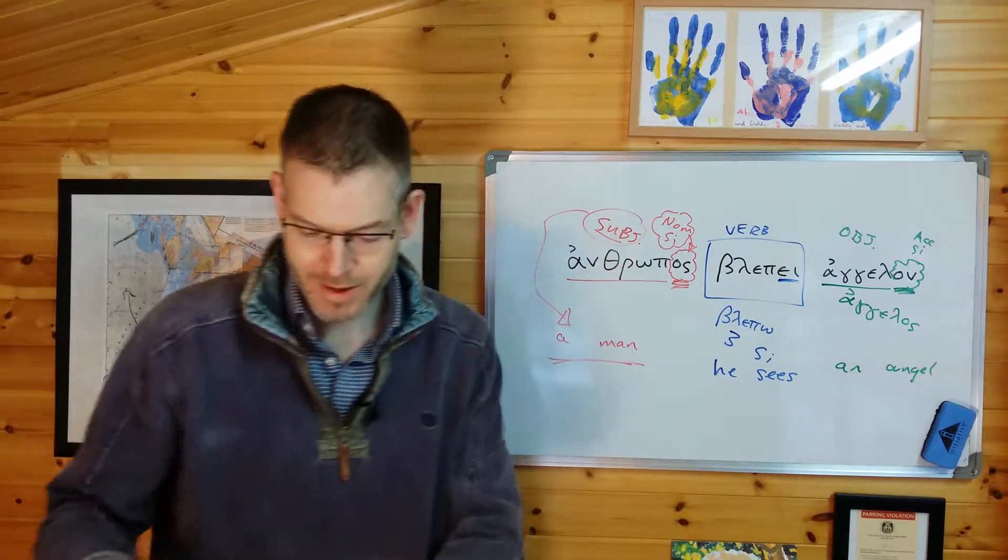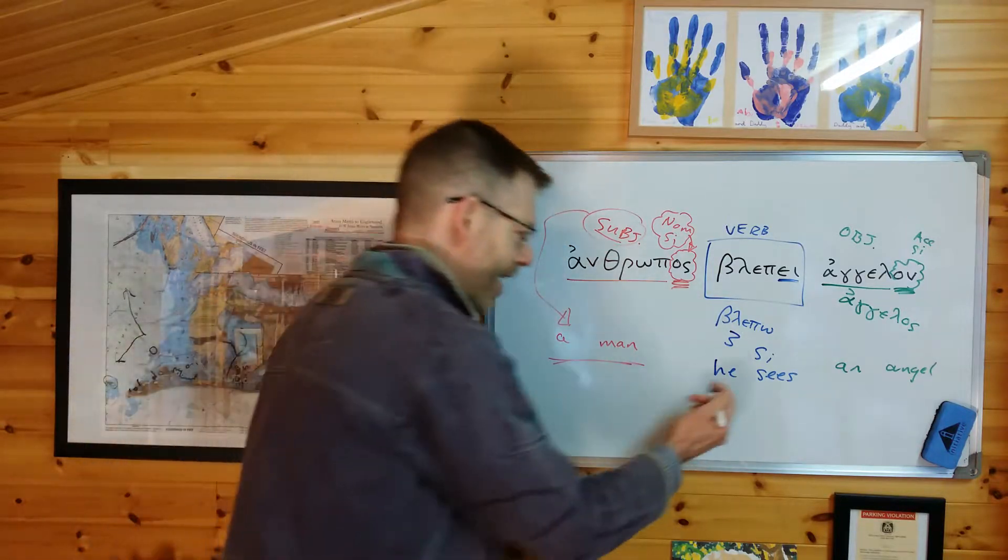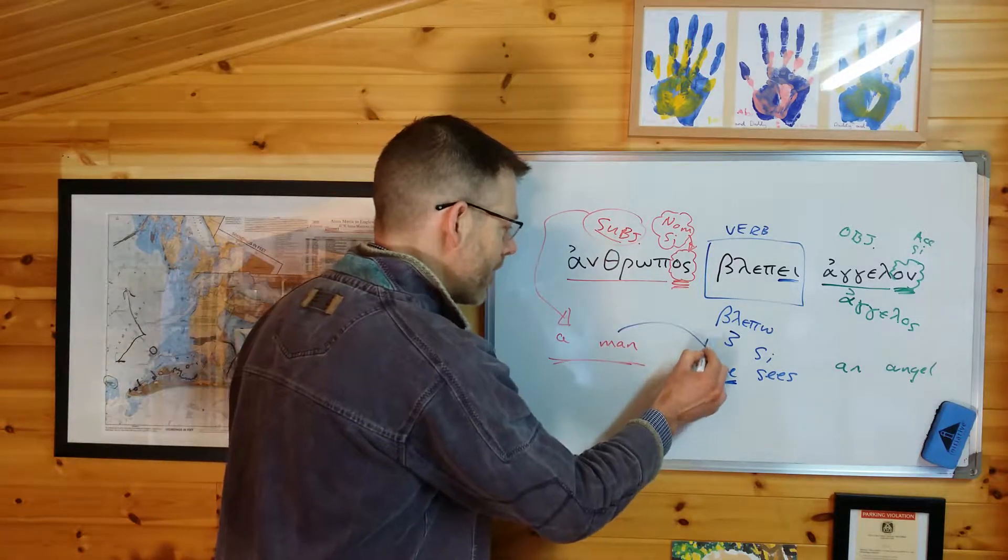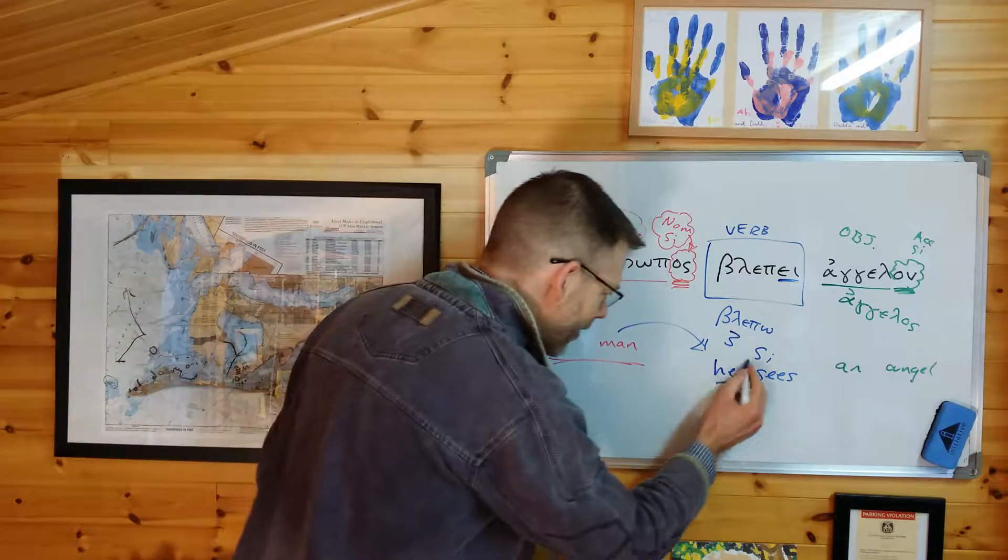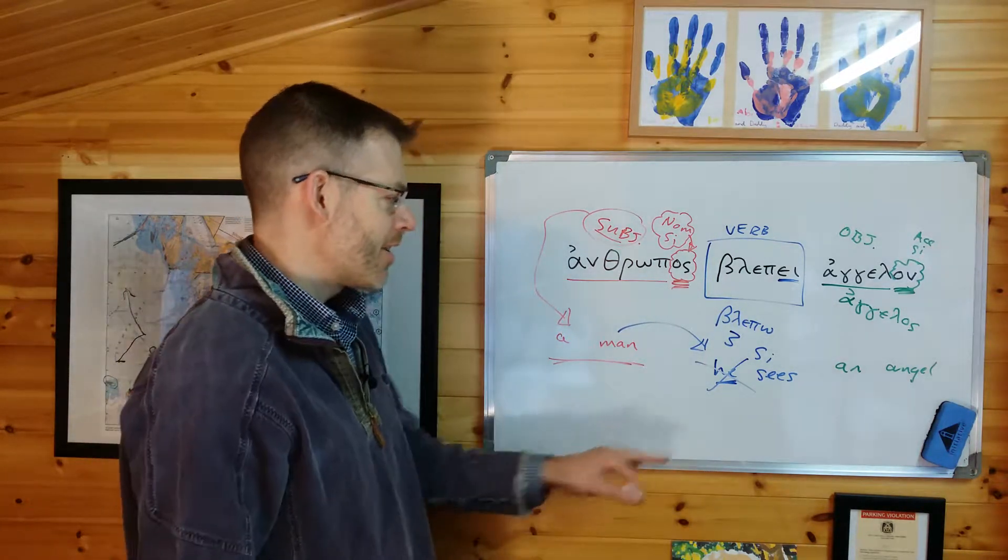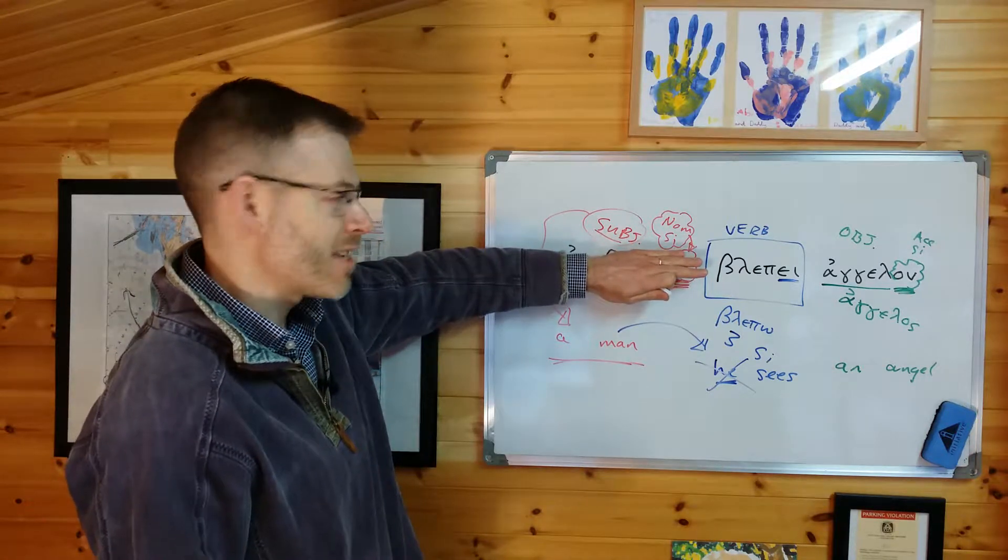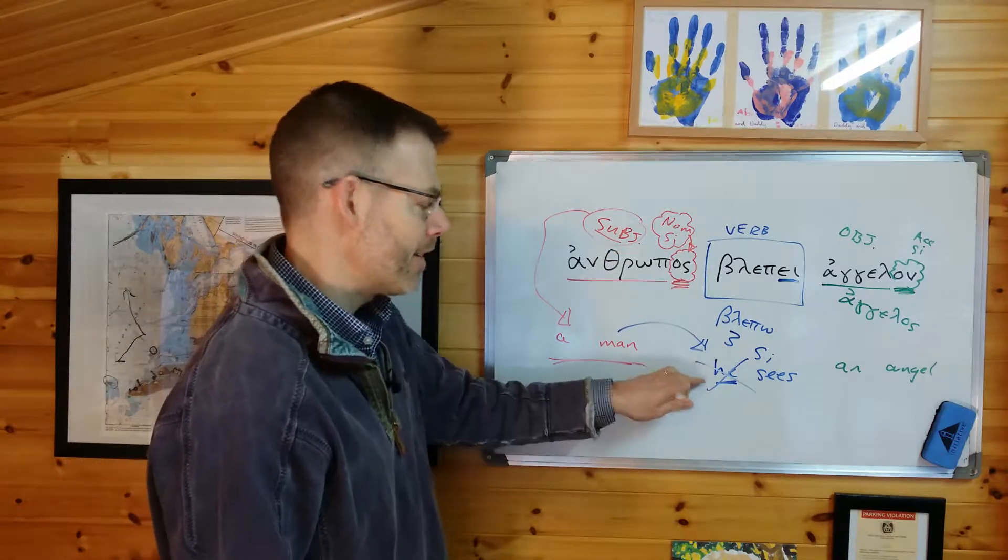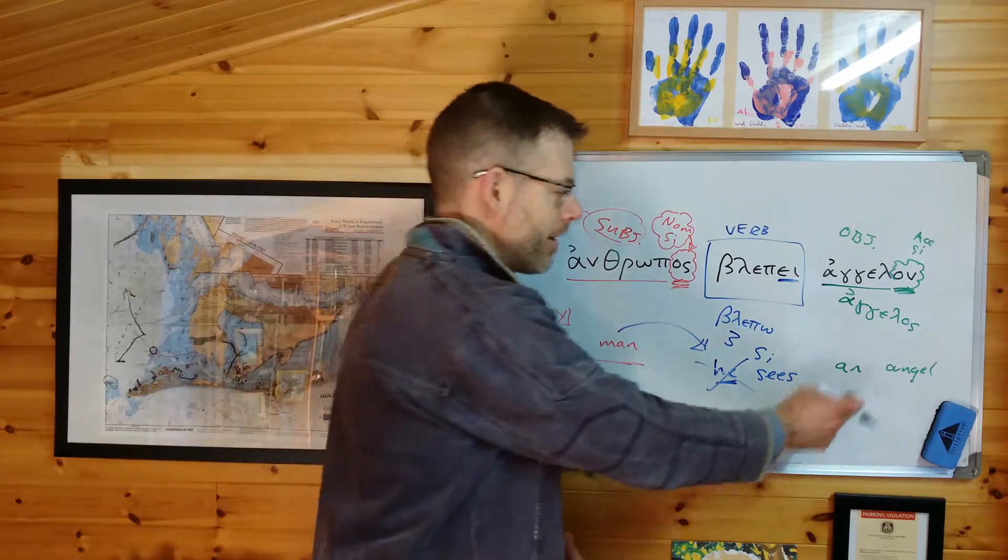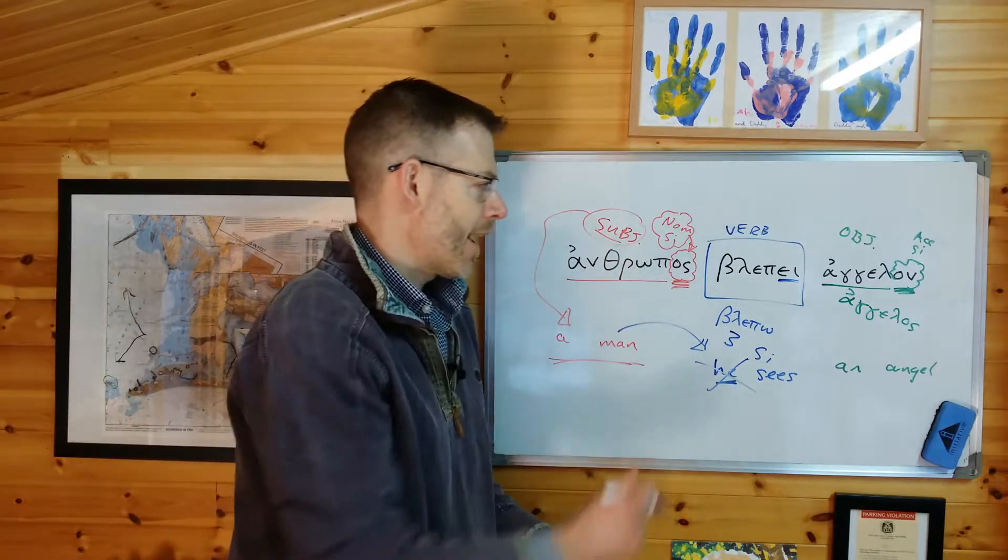Now one final tweak. Remember I mentioned about the verb, if it's in the third person singular, it can have a subject other than he or she or it. And in this case, it's the man which takes the place of the subject that's built into the verb. It sort of displaces it. It would say, he sees if there was nothing else here, no other subject to take its place, but because there is one, a man pushes that out of the way. So a man, the subject, sees the verb, an angel, angelon. Anthropos blepe angelon.